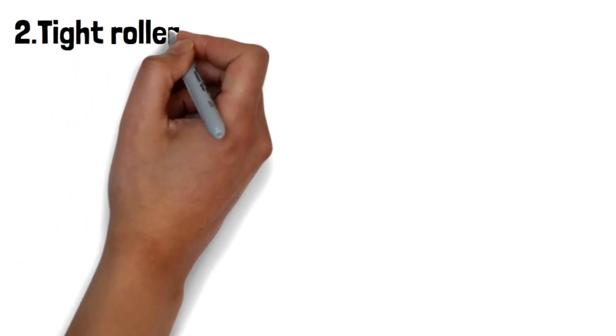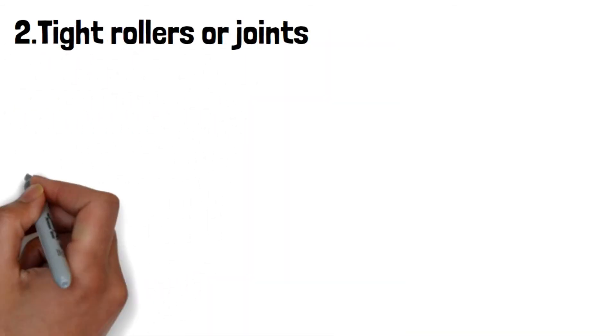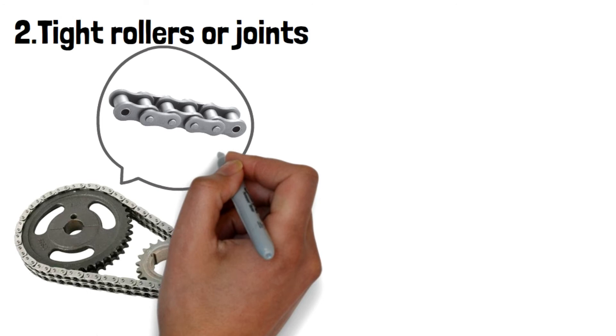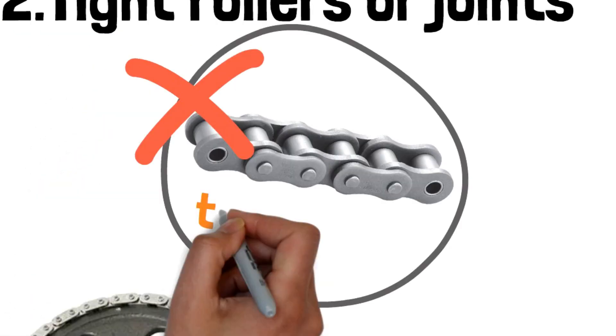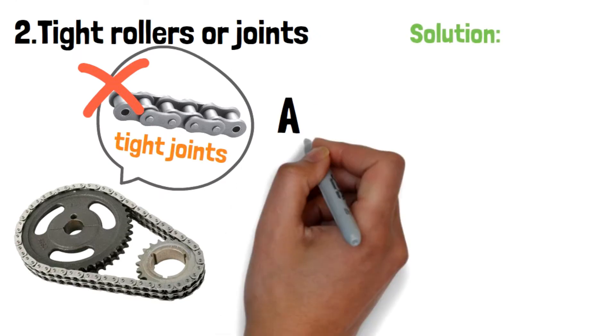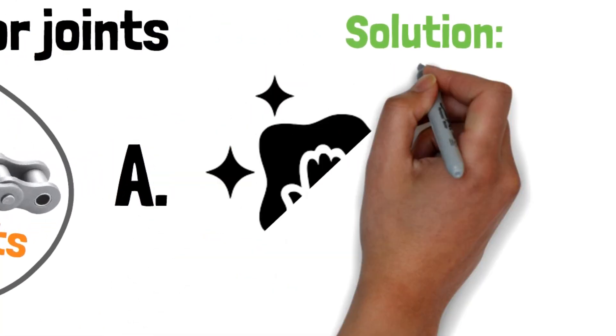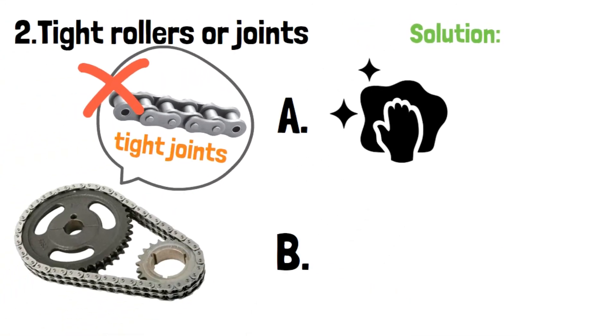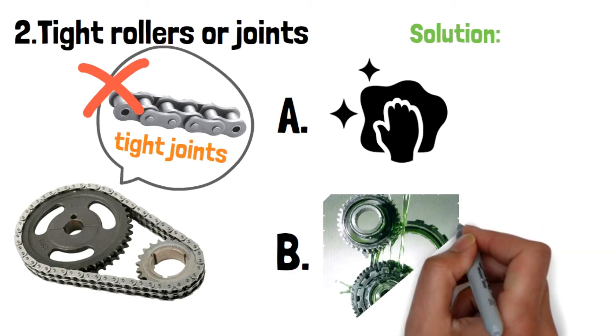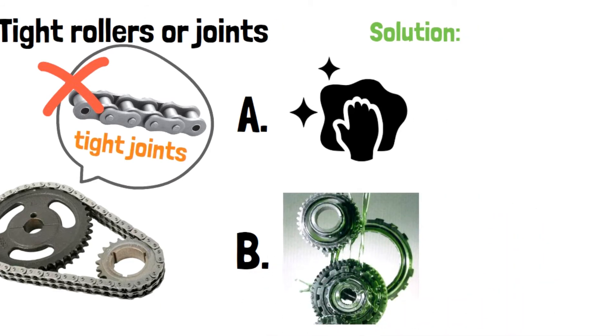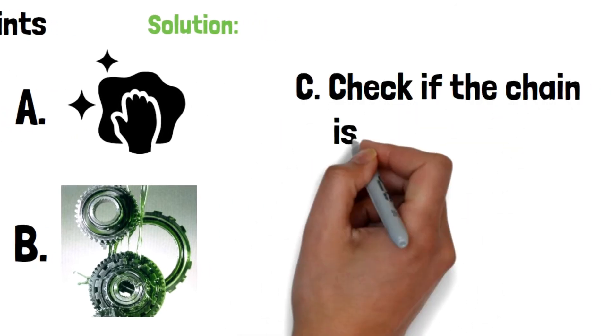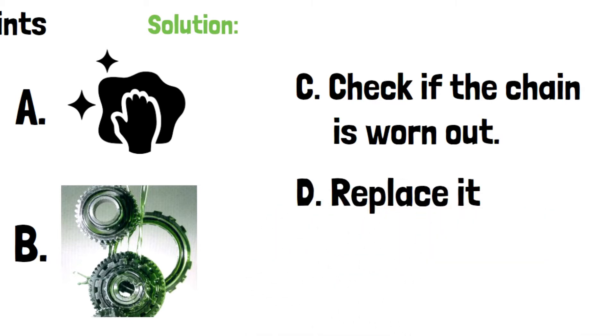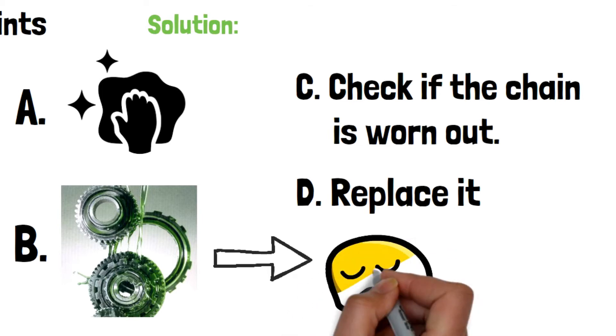Number two: tight rollers or joints. Twist the chain links to see if the chain can work properly. If the chain can't move freely up and down, ensure the chain may have tight joints. Solution here, clean the chain and remove any dirt or foreign substance which is stuck in the joints. Or check the lubrication status and re-lubricate the chain again. Then, check if the chain is worn out. Last, you may need to replace the chain if there is no better improvement after cleaning or re-lubrication.